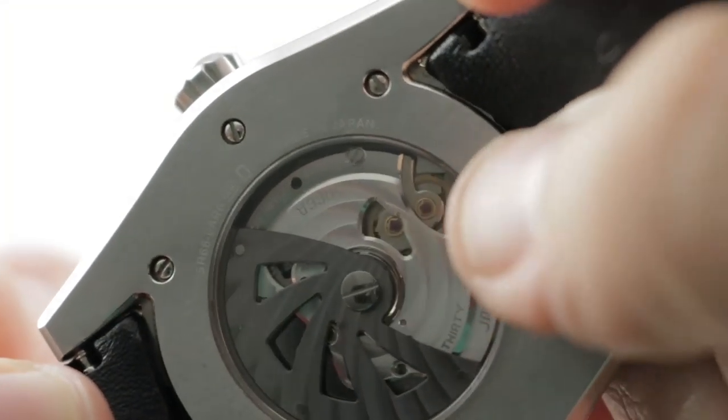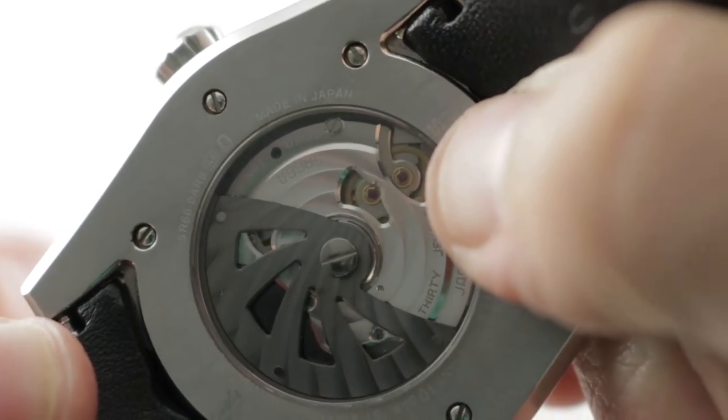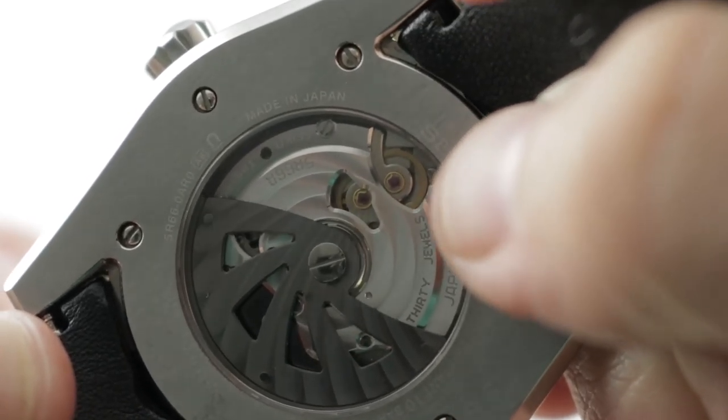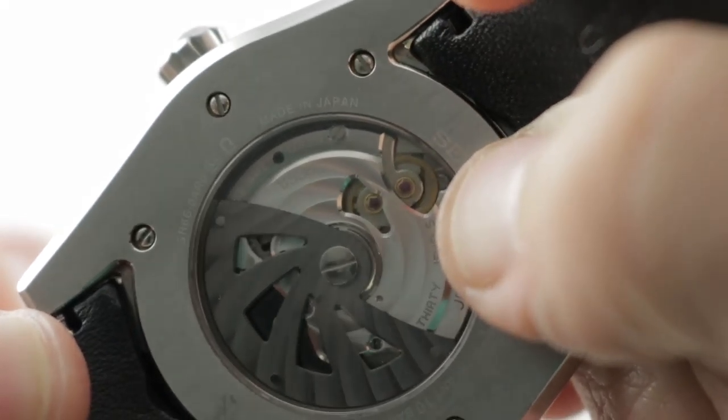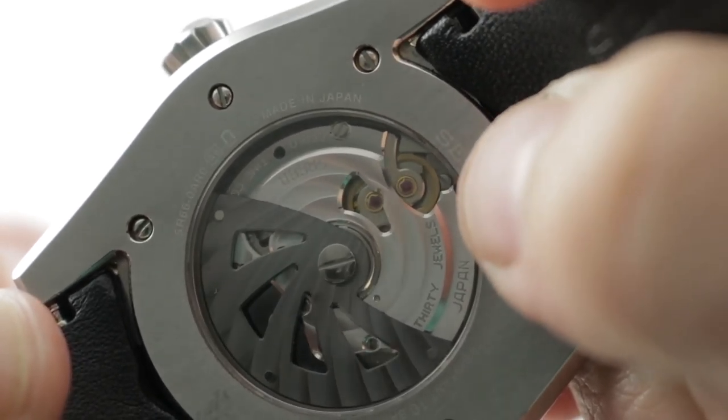All of the energy comes from the mainspring barrel. There's a governing wheel instead of an escapement. It creates an induced electrical current that wakes up a quartz oscillator. The quartz oscillator then creates a back electromagnetic force or back EMF that will either slow or speed up this unidirectional governing wheel depending on whether it needs to speed up or slow down to keep good time.